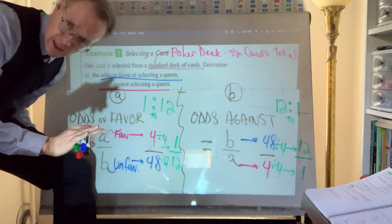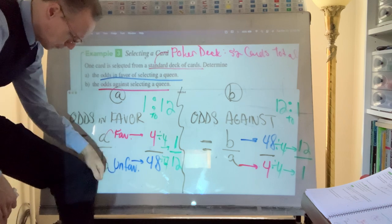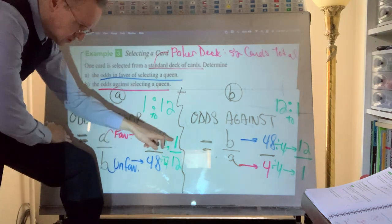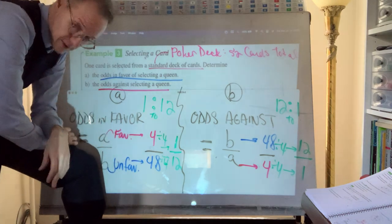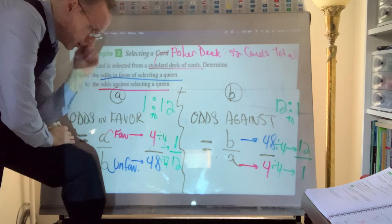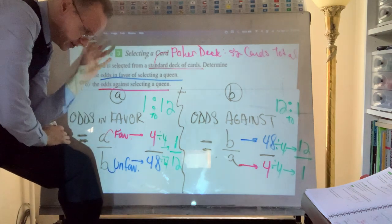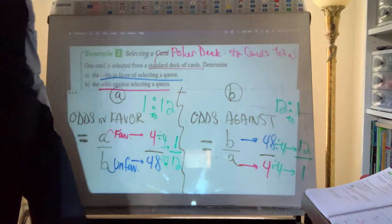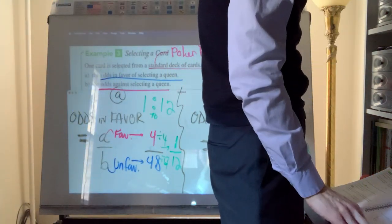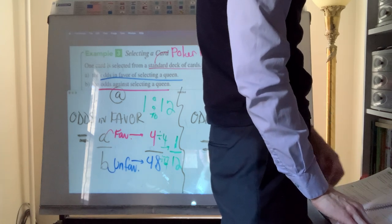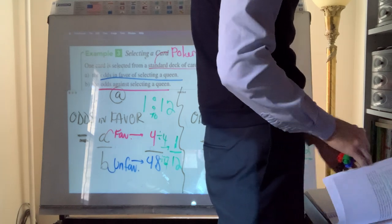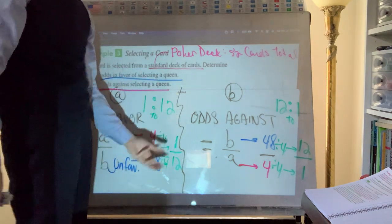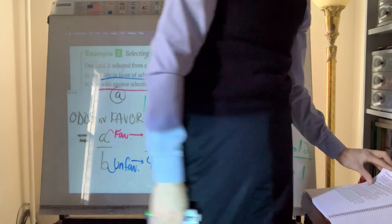It's worth noting that 1:12 and 4:48 represent the same relationship. A teaching challenge is convincing people that these mean the same thing even though they look different with distinct figures. Odds in favor of selecting a queen is one to 12; odds against is 12 to one — just a different perspective. Smaller numbers are a little bit easier for people to understand.